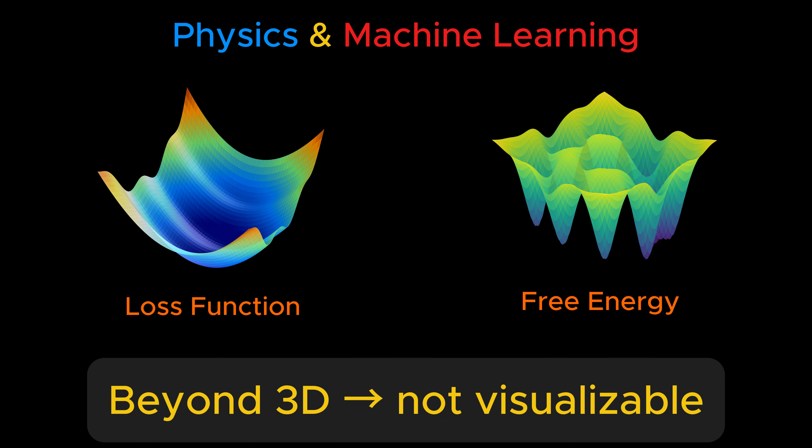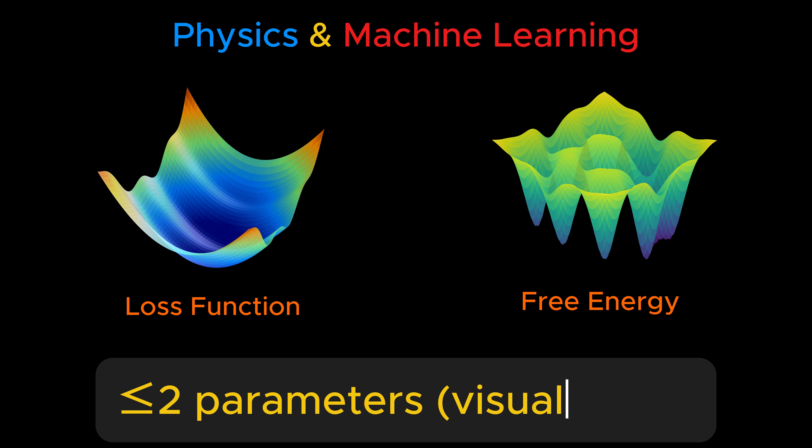Conventionally, we can only visualize up to three dimensions, and even then, one of those dimensions is always reserved for the landscape itself. In other words, using standard plotting techniques, we can only directly visualize functions that depend on no more than two variables. Anything beyond that becomes inaccessible to our intuition.